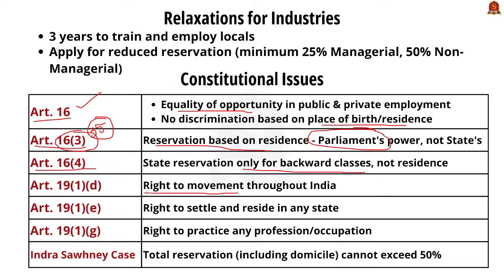This bill also affects the right to freedom of movement throughout India, mentioned under Article 19. It affects the right to settle and reside in any state, since the local quota would prevent people from one state from seeking employment in another. The bill also restricts employers' freedom to hire, violating citizens' right to practice any profession under Article 19.